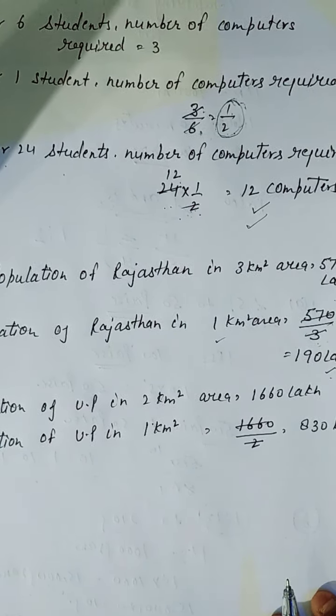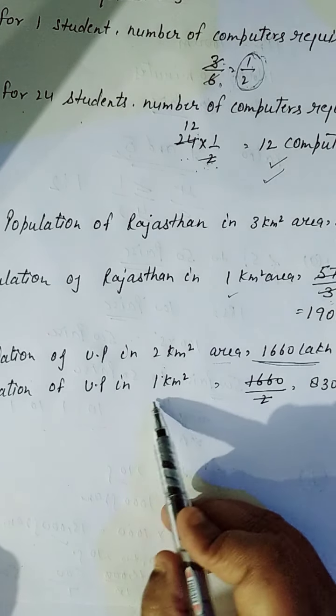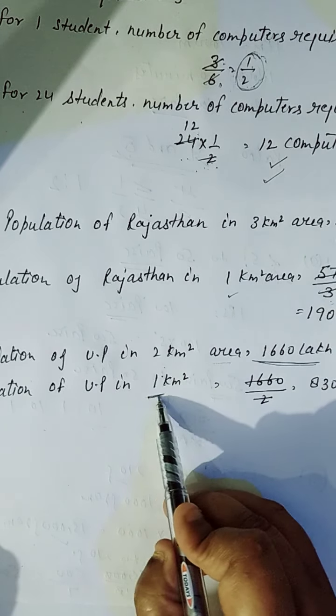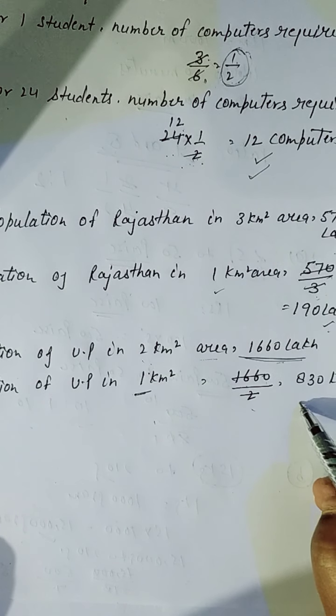Same hamein karenghe, UP ke liye. Population of UP, 2 km area mein jo rehti hai, wo kitni hai? Itni, 1660 lakh. So, 1 km, yani aap ko zyada ka dekhein, kam se pooch raha hai, to hamein divide karte hai. Yeh to hamein padha hi hua hai. So, 1660 divided by 2. Kitna aayega? 830 lakh.